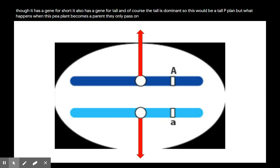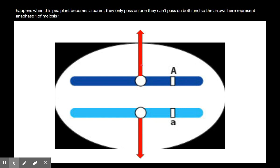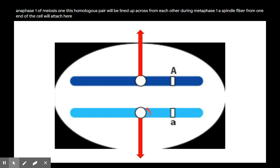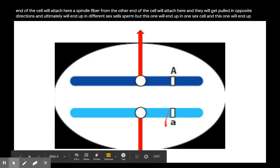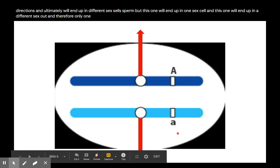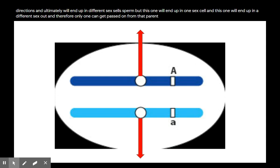So in this case, this would be a tall pea plant — even though it has a gene for short, it also has a gene for tall, which is dominant. But when this pea plant becomes a parent, it can only pass on one gene. The arrows here represent anaphase one of meiosis one: this homologous pair lines up during metaphase one, a spindle fiber from one end attaches to one chromosome and a spindle fiber from the other end attaches to the other, and they get pulled in opposite directions, ultimately ending up in different sex cells — sperm or egg. Therefore only one gene gets passed on from that parent.